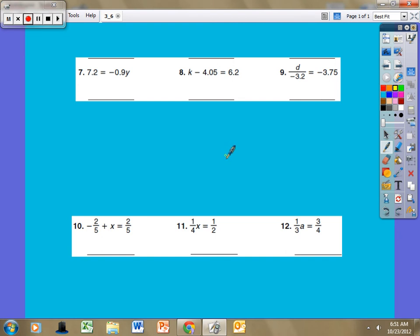So taking a look at, let's do number seven. I'm going to rewrite it down here. It says 7.2 equals negative 0.9 times y. Well, I want to evaluate for one y, not nine tenths of a y.